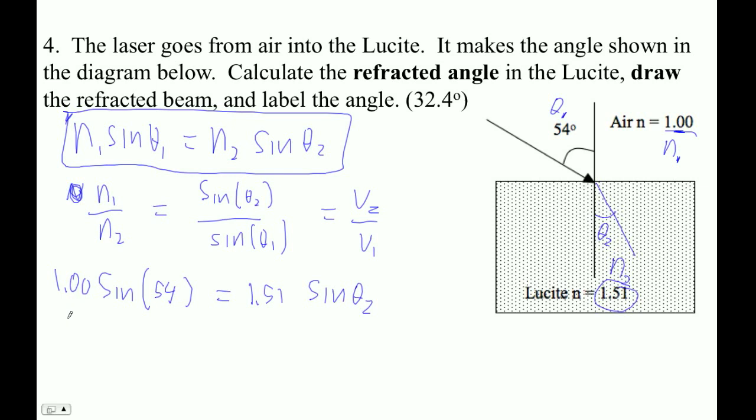So 1 sine 54 divided by 1.51, right? I get, oh, 11. I just did 11. Let's try that again. Not 11. 1.